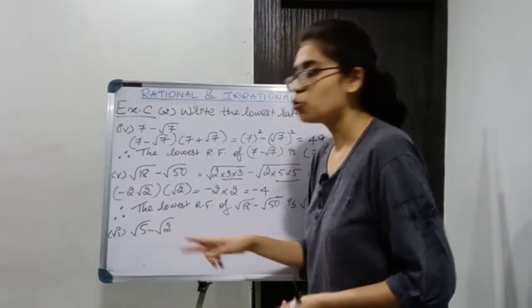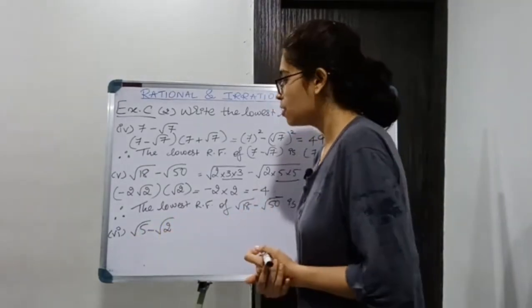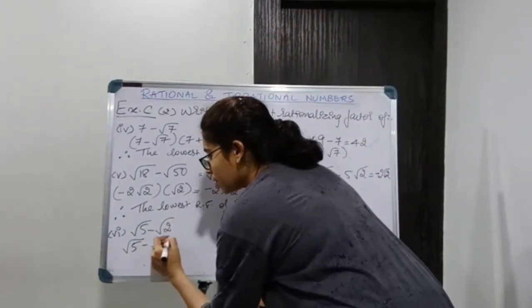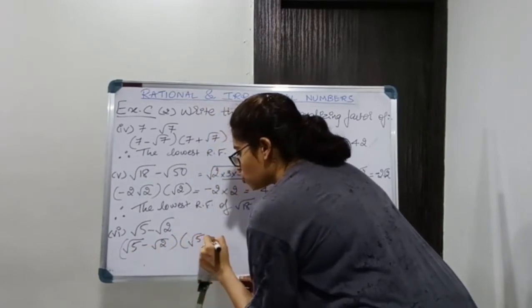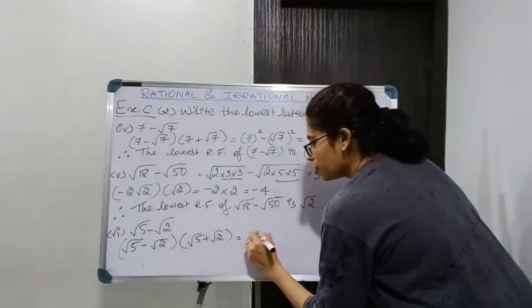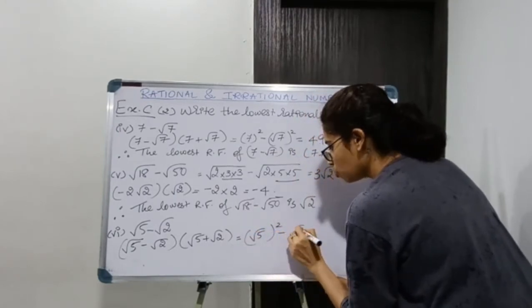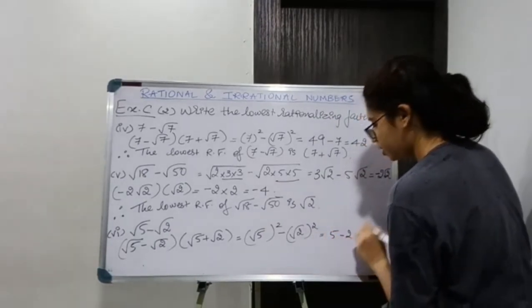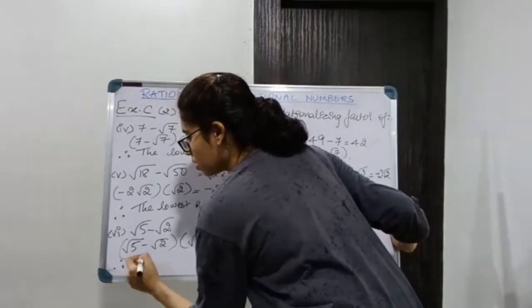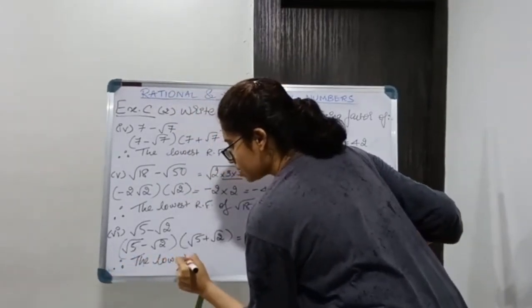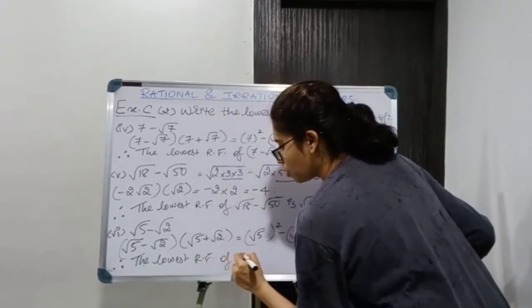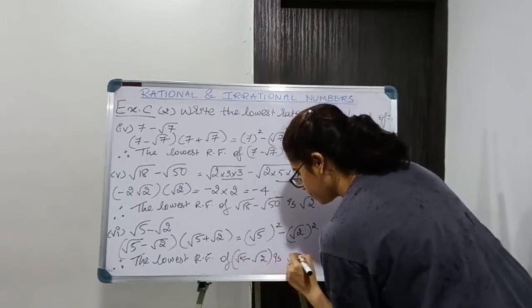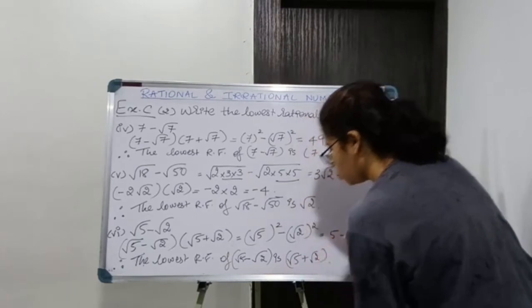For √5 - √2: I already have prime numbers inside, so I cannot reduce further. Multiplying by the conjugate, the rationalizing factor is √5 + √2. It gives (√5)² - (√2)² = 5 - 2 = 3, which is rational. Therefore the lowest rationalizing factor of √5 - √2 is √5 + √2.